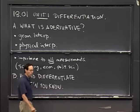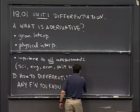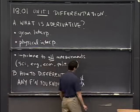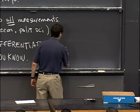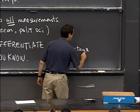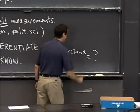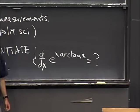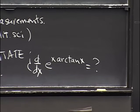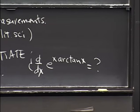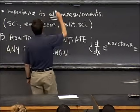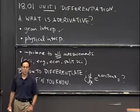That's kind of a tall order, but let me just give you an example. If you want to take the derivative — this is the notation for the derivative — of some messy function like e to the x arctan of x, we'll work this out by the end of this unit. Anything you can think of, anything you can write down, we can differentiate it. Today we're going to spend most of our time on the geometric interpretation.